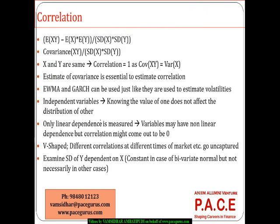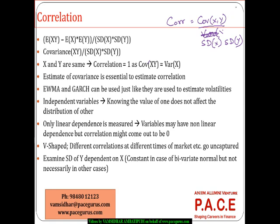When it comes to the world of correlation, the correlation between two variables is defined as the covariance between the two divided by the standard deviations of both of them separately — the multiplication of the individual standard deviations. That is what brings out the world of correlation.